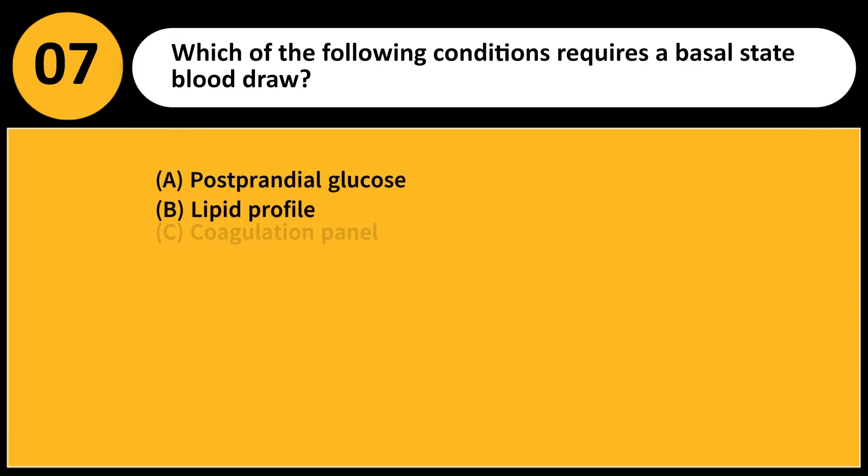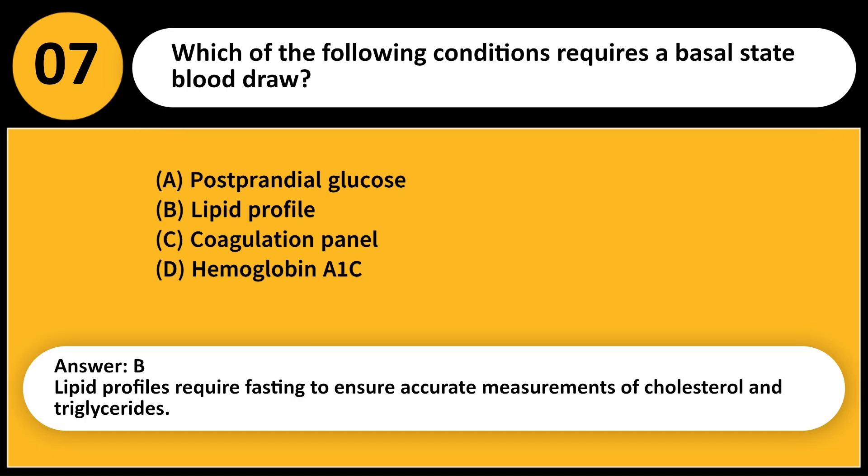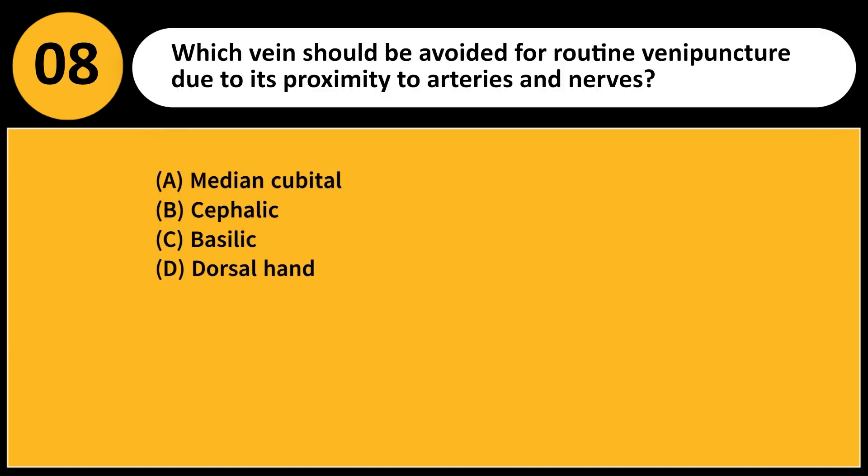Which of the following conditions requires a basal state blood draw? A. Postprandial glucose. B. Lipid profile. C. Coagulation panel. D. Hemoglobin A1c. Answer: B. Lipid profiles require fasting to ensure accurate measurements of cholesterol and triglycerides.